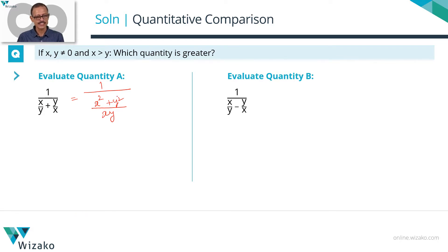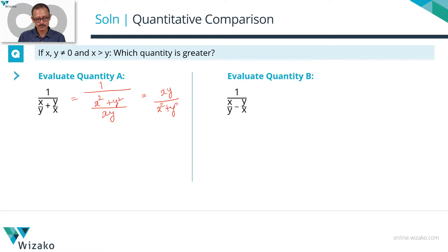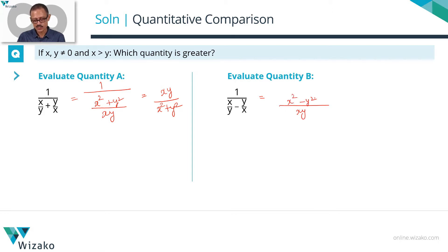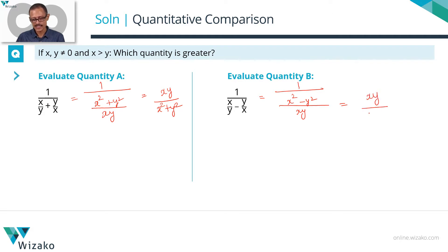We can simplify one more step: taking the reciprocal gives us Quantity A = x·y / (x² + y²). Now for Quantity B, the common denominator is again x·y, with x² and y² in the numerators. So Quantity B simplifies to x·y / (x² − y²).